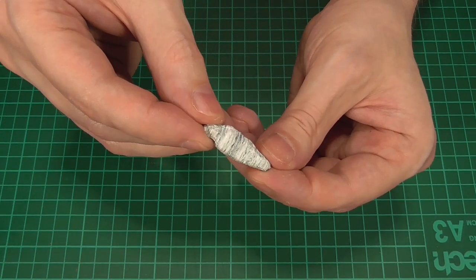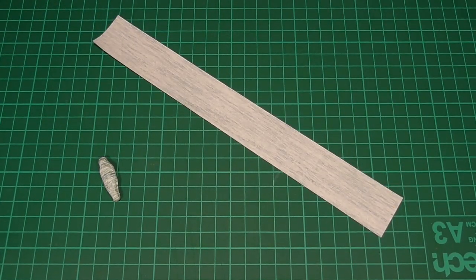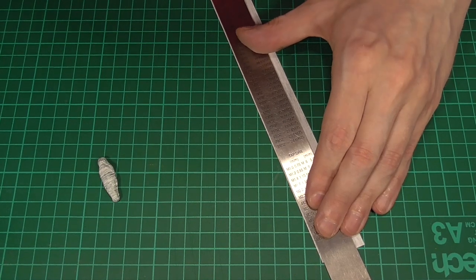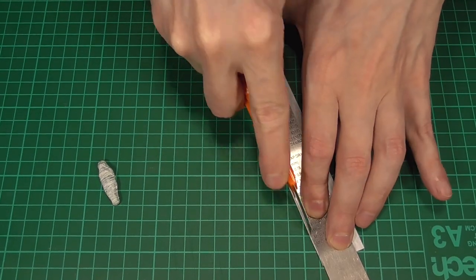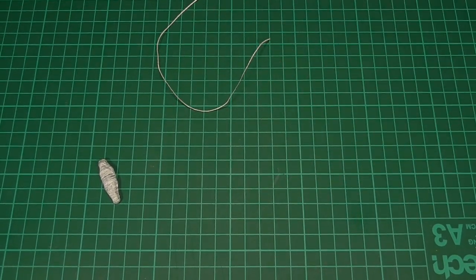But at the moment, it doesn't look very convincing. So what we'll need to do next is cut out the longer, lighter web texture. And from that, we'll cut a very narrow strip, like a millimeter wide, if that.